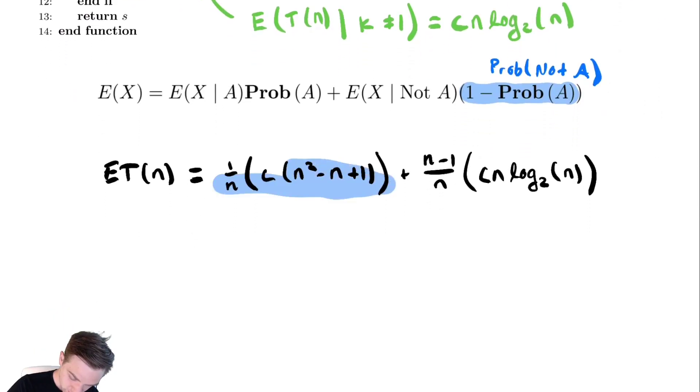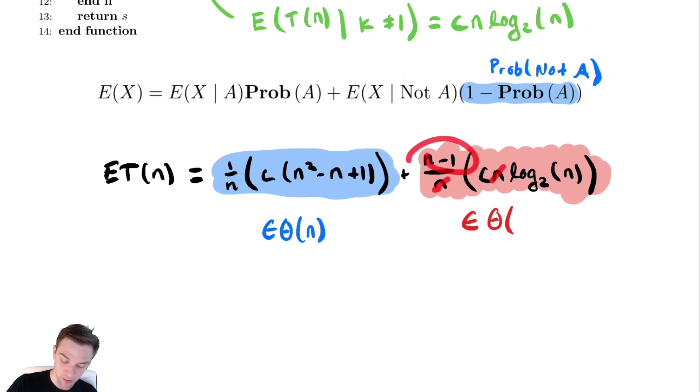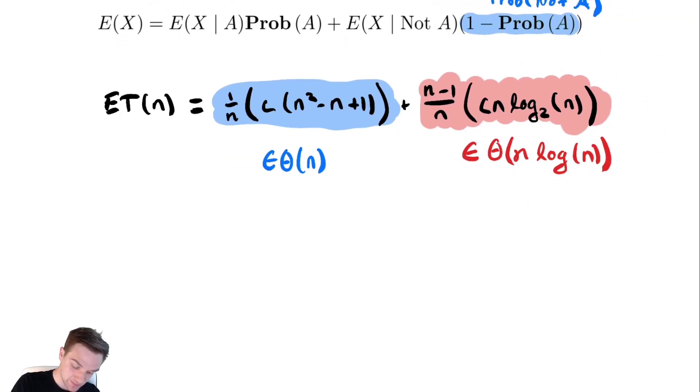So this term is n theta of n squared over n or theta n. The second term is n theta of, well my n's cancel, but I still have an n in my numerator, so it's n log n. So et of n is n theta of n log n.